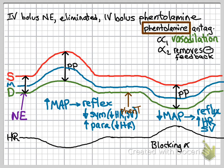Now, there is one complicating factor: the alpha-2 receptors. Phentolamine blocks alpha-2 receptors and removes negative feedback from the system, which is actually going to increase the magnitude of the reflex sympathetic activity. So you may see an even greater increase in heart rate and contractility than expected. This means the decrease in systolic pressure might be even less than shown on this graph — the curve might be closer to flat or might even go up a little. In any case, this removal of negative feedback has the potential to accentuate sympathetic responses.